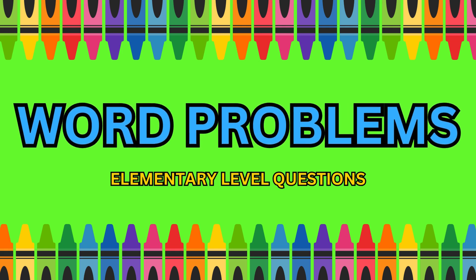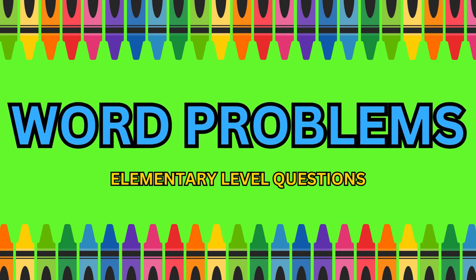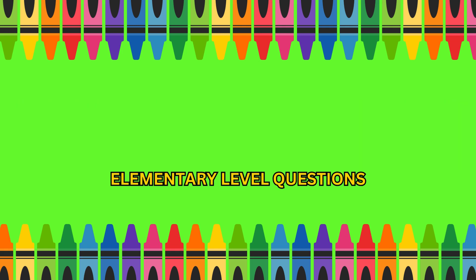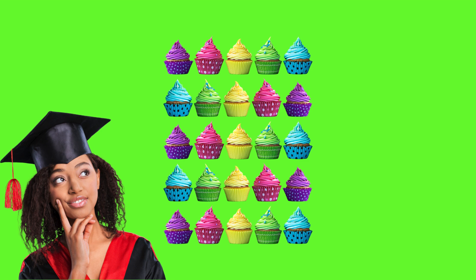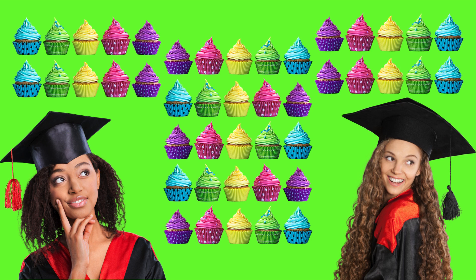Let's solve word problems. Sage made 25 cupcakes for her graduation party. Her friend London bought another 20 cupcakes for the party. How many cupcakes are there altogether?